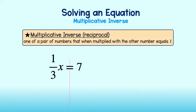Take a look at this equation. We see 1 third being multiplied by x. According to past examples, we should divide by 1 third, but dividing by 1 third is the same as multiplying by the reciprocal, or multiplicative inverse. I'll say that again. Dividing by 1 third is the same as multiplying by the reciprocal.